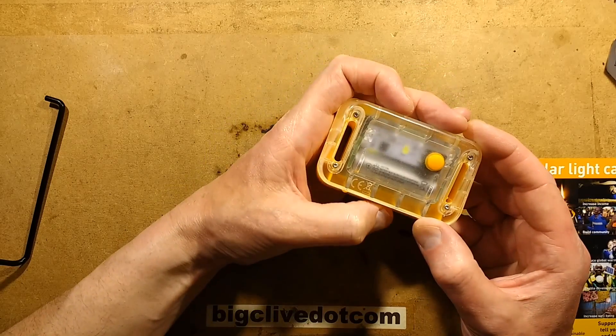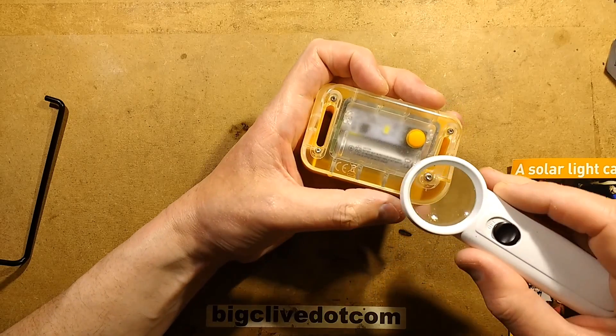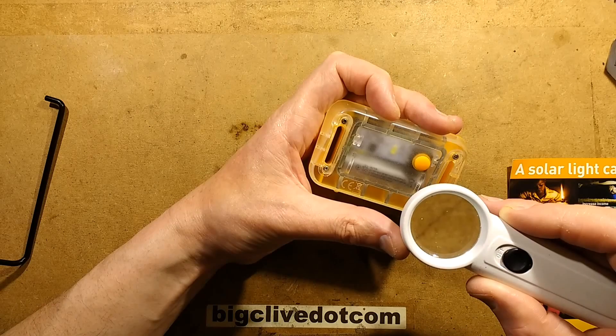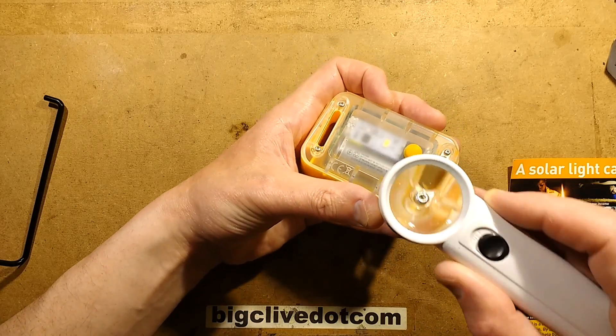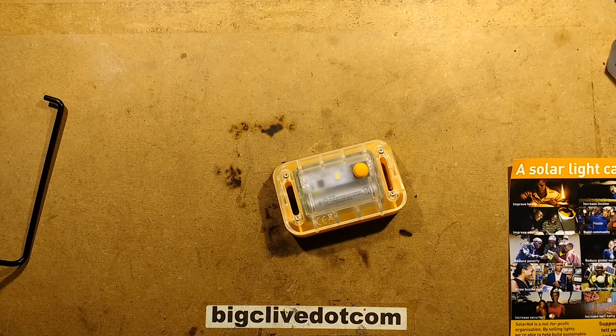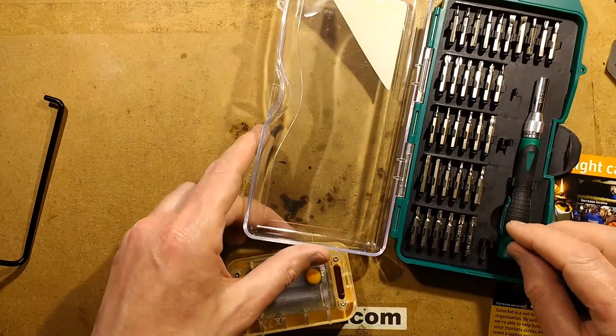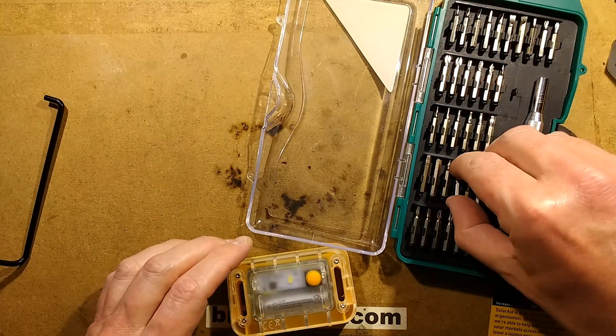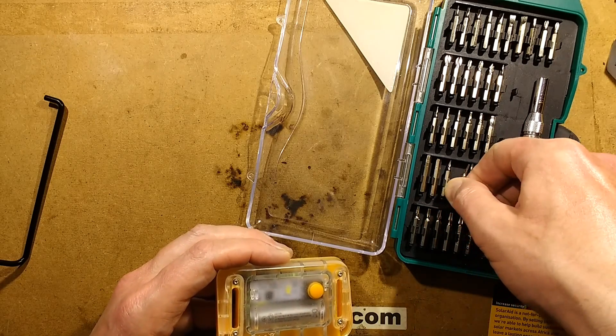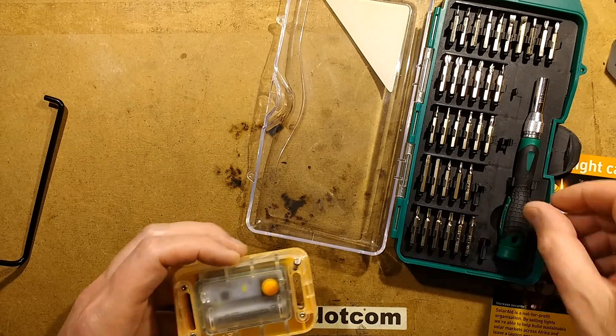The screws that hold it together are not cross head. They look like torx, could be hex. I'm going to have to crack out the high-tech screwdriver set with lots of bits. Let's start with one of the smaller ones. How about this one? Perfect fit, excellent.